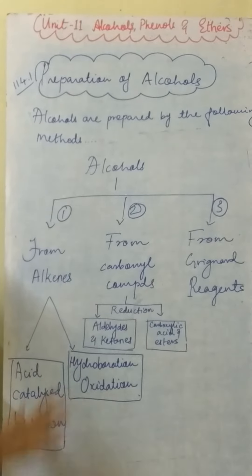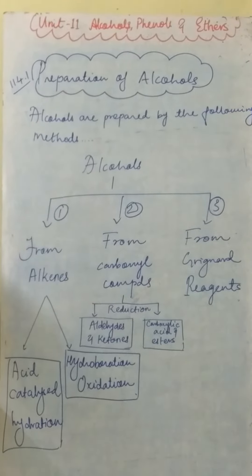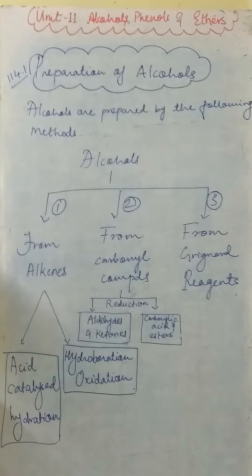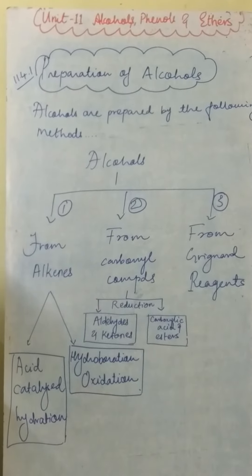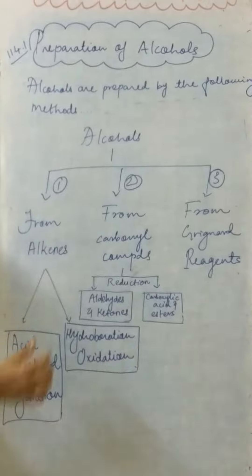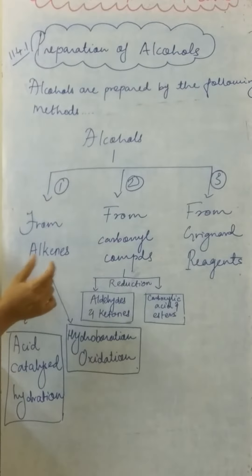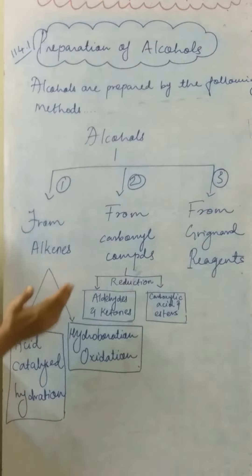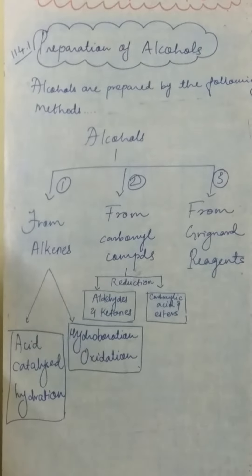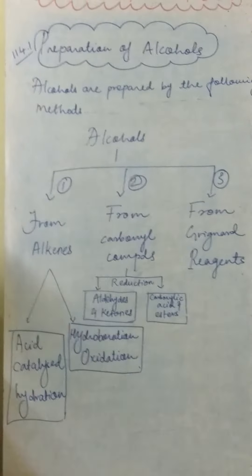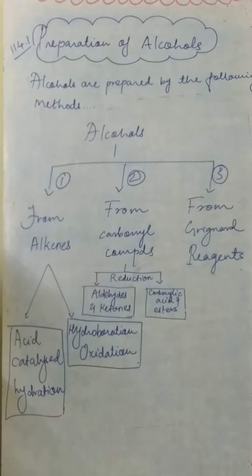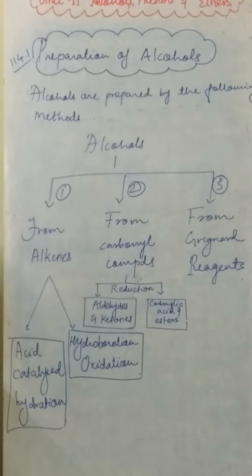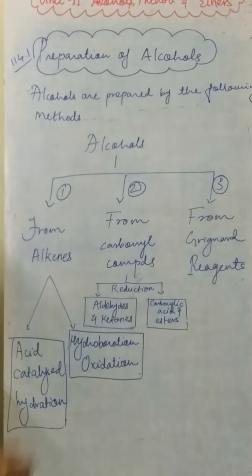Acid-catalyzed hydration and hydroboration-oxidation are the two methods from alkenes. From carbonyl compounds, that is reduction — for aldehydes and ketones — and another one is carboxylic acids and esters. Number three is from Grignard reagent. This is the main preparation discussion section.